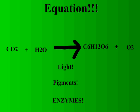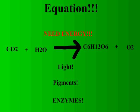Creating glucose is so difficult that plants need to do it in two separate steps. We can see from the photosynthesis equation that we have the carbon, hydrogen, and oxygen necessary to make glucose. However, actually bonding those elements together will be the second step of photosynthesis. First, we need to create the energy necessary to make those bonds.